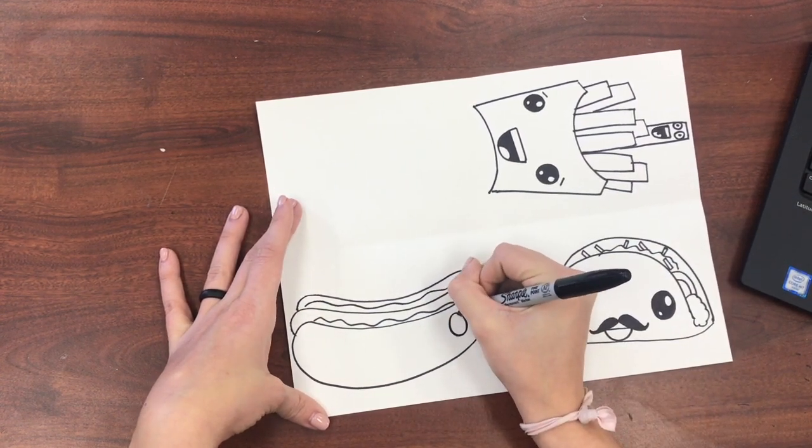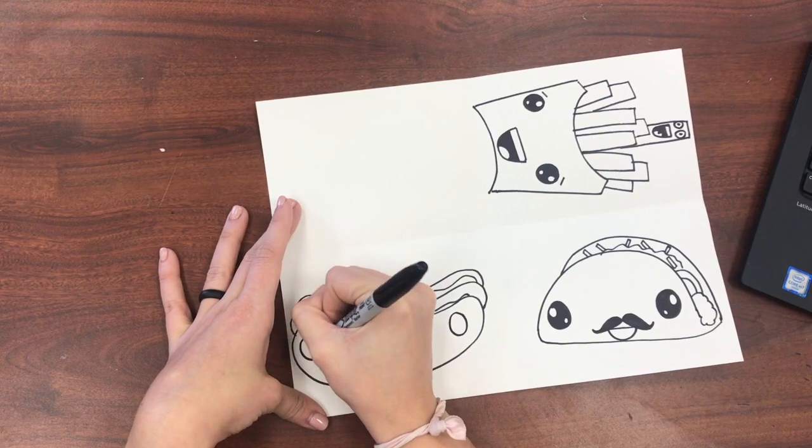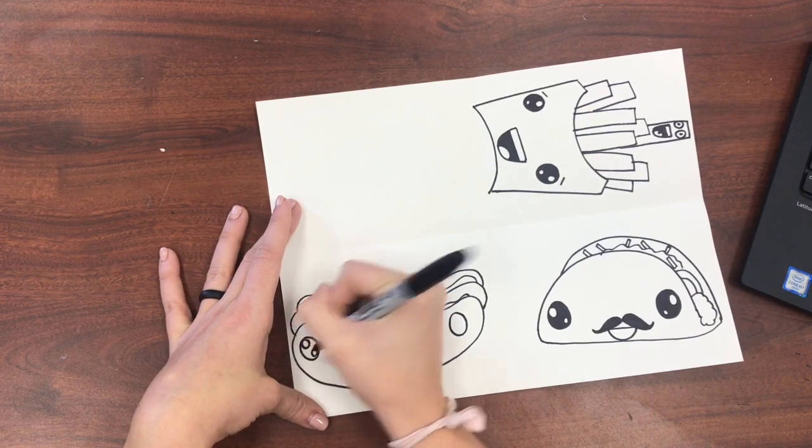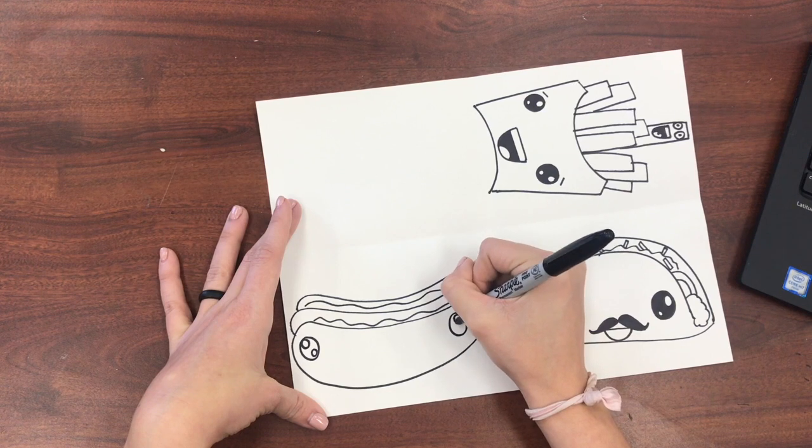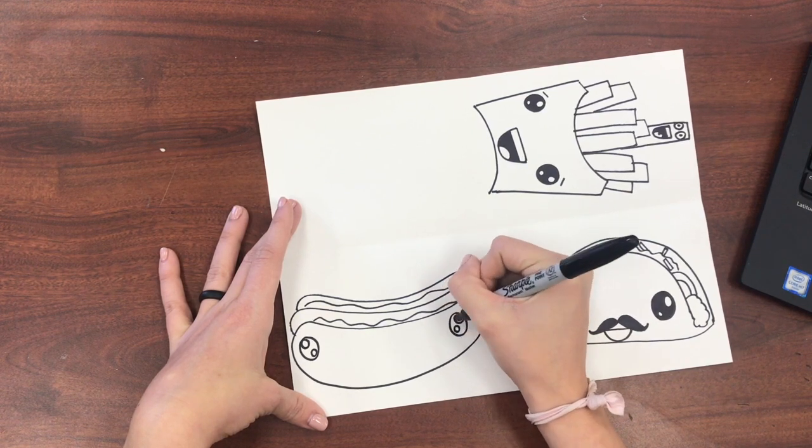Now I'm going to start my face. I'm going to be making my eyes with two large circles. You can make yours on the ends of your bun like I did or you can draw them closer together in the middle. It's totally up to you.